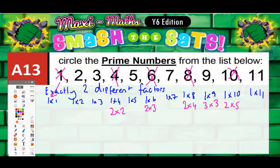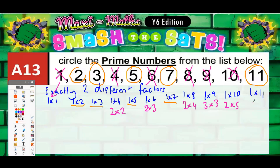The ones we've got left are in fact the prime numbers. Double-check there's no other way of making them: two is only one times two, three is only one times three, five is only one times five, seven is only one times seven, eleven is only one times eleven. So the prime numbers are two, three, five, seven, and eleven. It's a good idea to remember those. The next one would actually be thirteen.